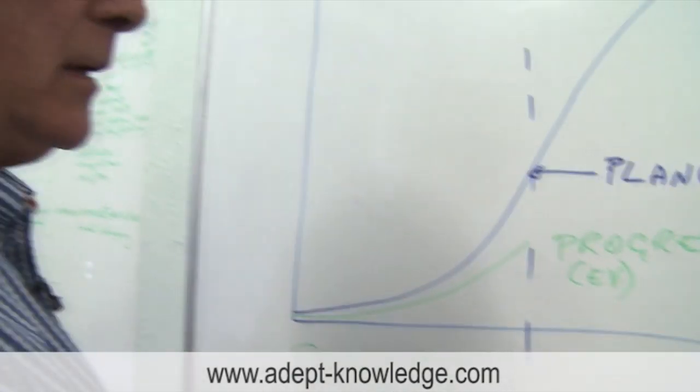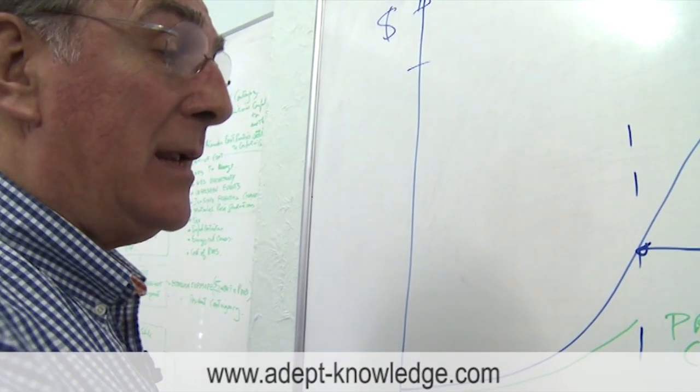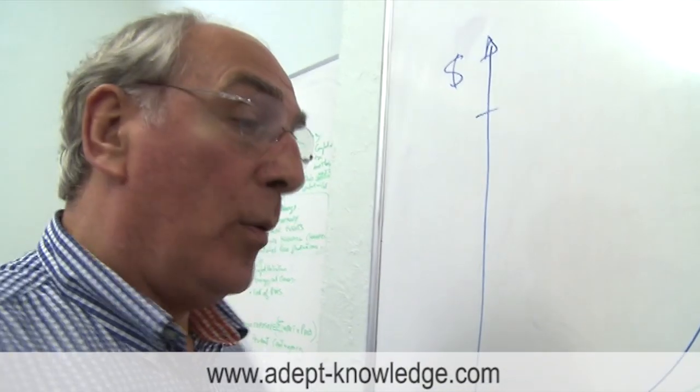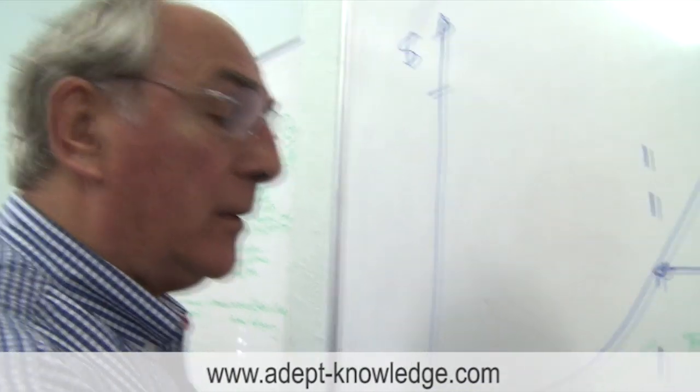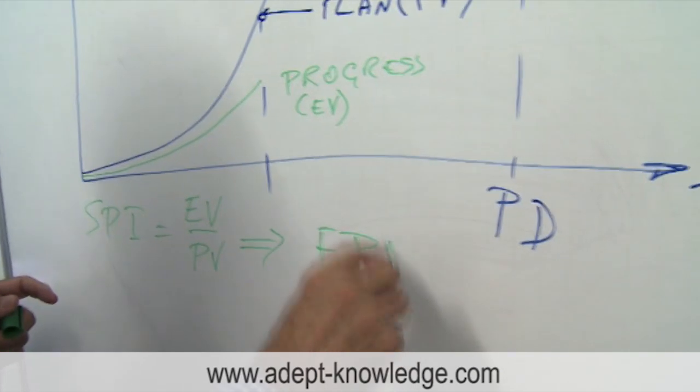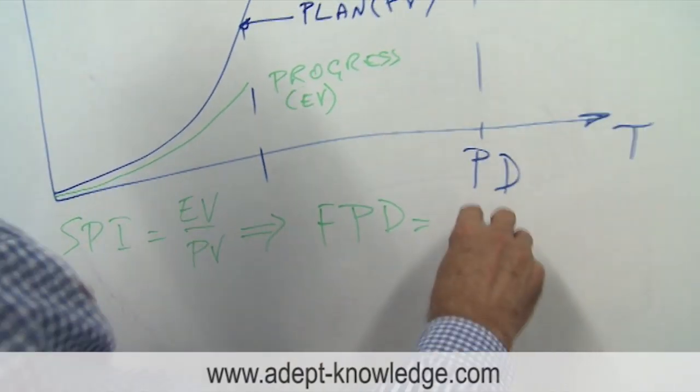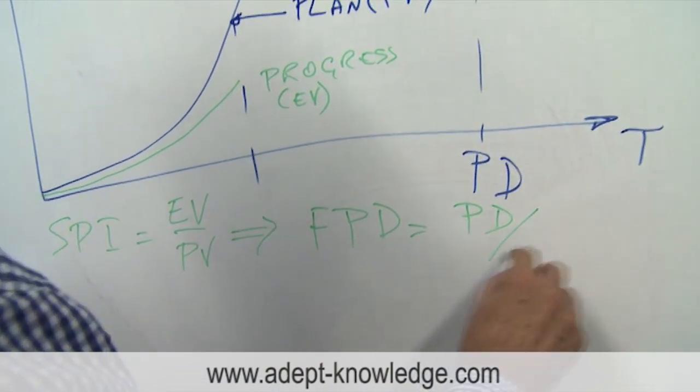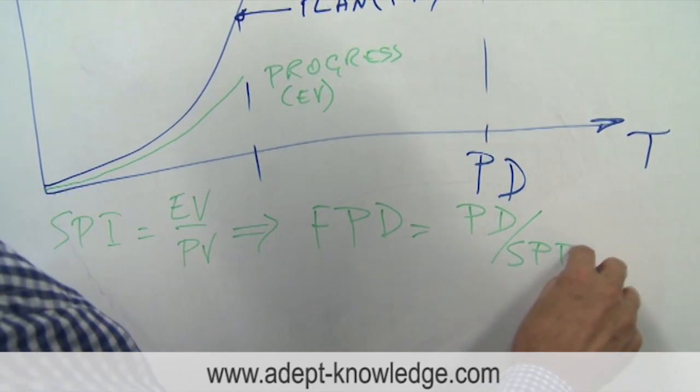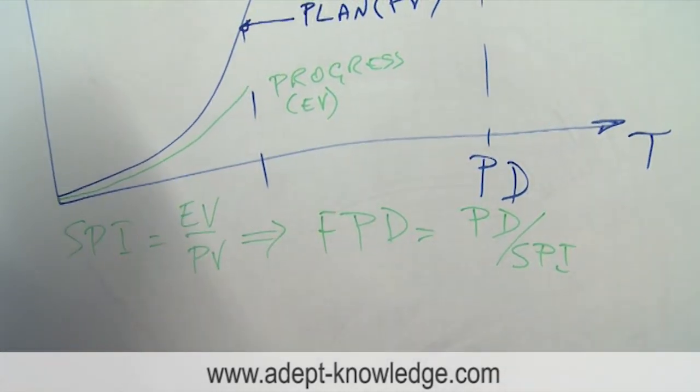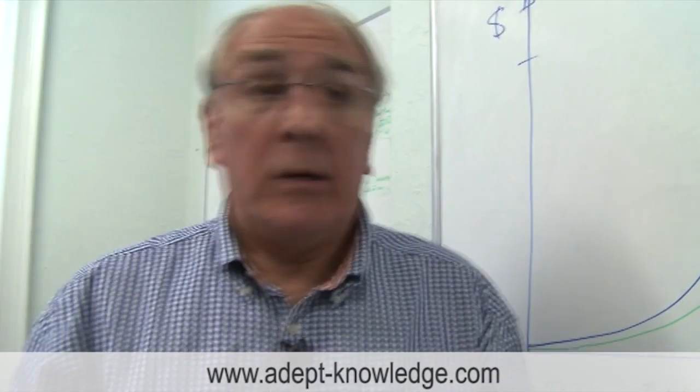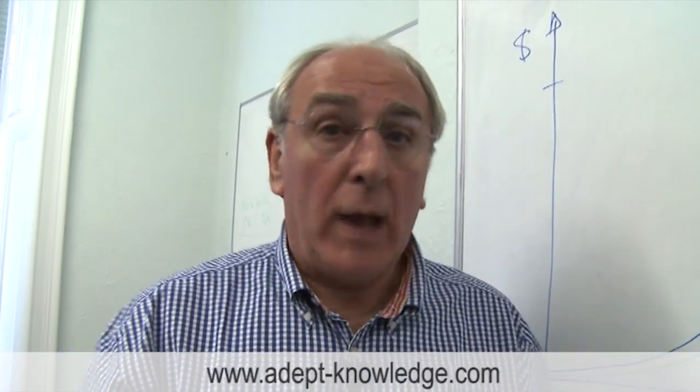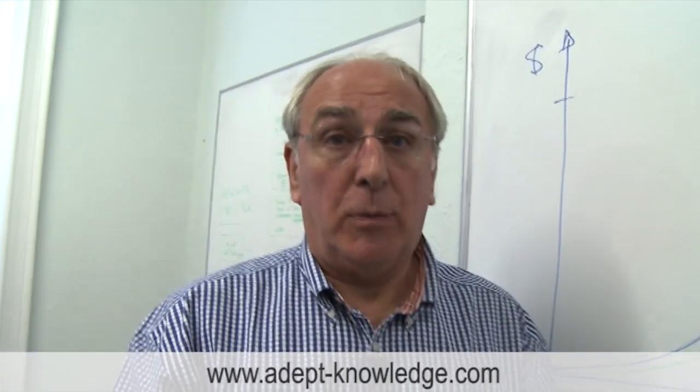And then using that index, if we simply take the project duration and that index of performance, what we can do is make a forecast of the project duration. And that is simply the project duration divided by this schedule performance index. I think that's a pretty important index because this is really your effectiveness. How well are you doing in relation to what you plan to do?